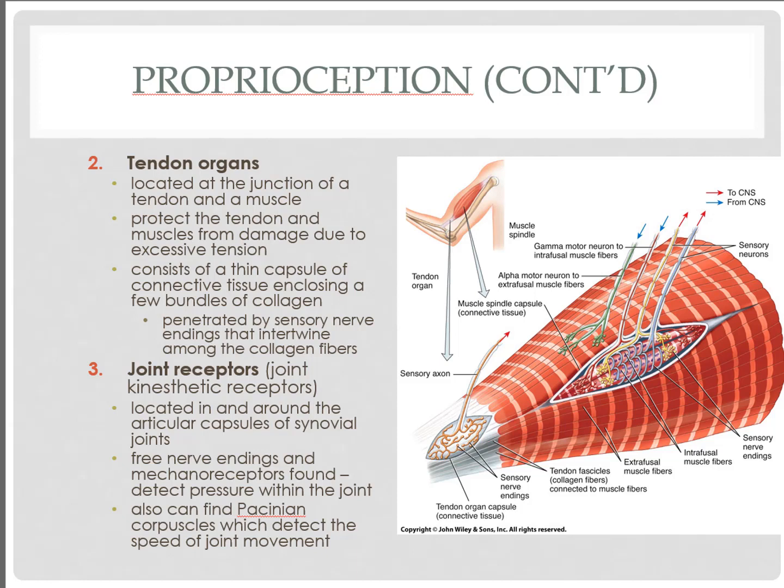Our joint receptors are located within the articular capsules of the synovial joints. These nerve endings tell us the amount of pressure taking place, and changing pressure in a joint tells us the speed of joint movement. From these three proprioceptors we get: muscle tone and stretch from muscle spindles, the amount of muscle load from the Golgi tendon organ, and joint movement from joint receptors.